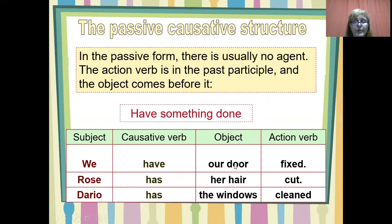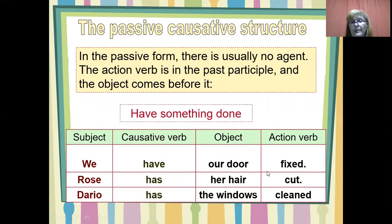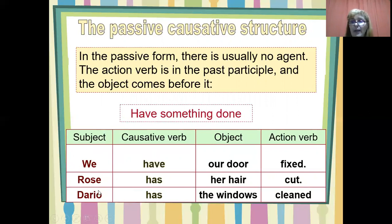We have our door fixed. What does it mean? Do we do the action? No, we don't. We hire another person to do the action for us. Rose has her hair cut. Darío has the windows cleaned. In all these cases, these people are not doing the action — someone else is doing the action.